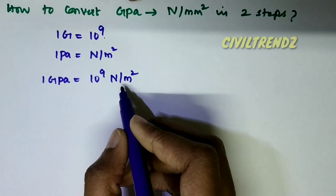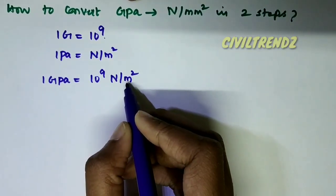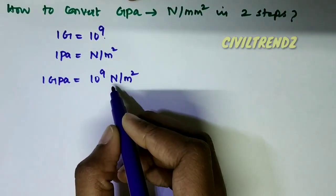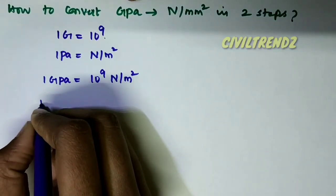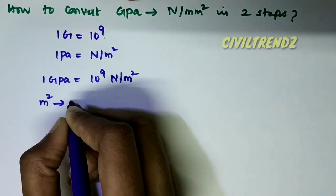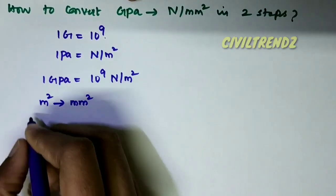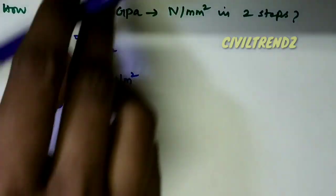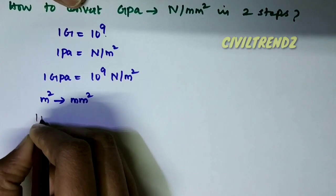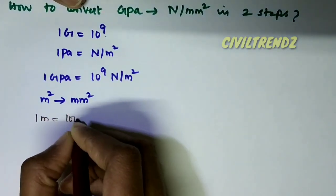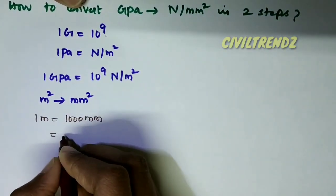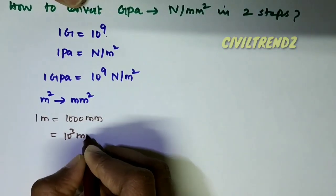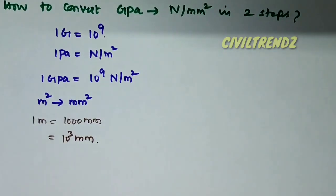Now we convert Newton per m² to Newton per mm². 1 meter square to mm²: 1 meter is equal to 1000 mm, that is 10 power 3 mm.